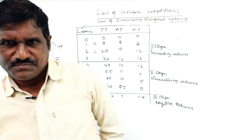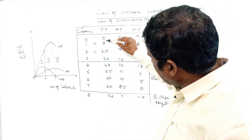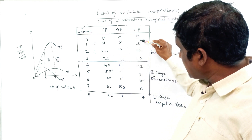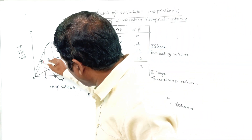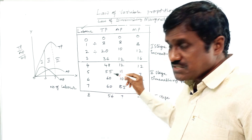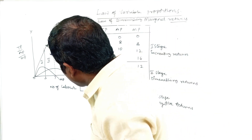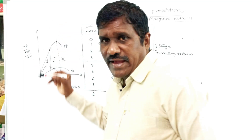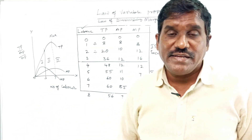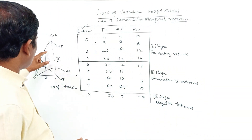Let me explain the diagram of the law of variable proportions. The total production at the initial stage is increasing at an increasing rate — 8, 20, 36 — it is an increasing rate. Then in the second stage, total production increases at a diminishing rate. It reaches the maximum, and after that the total production will diminish.